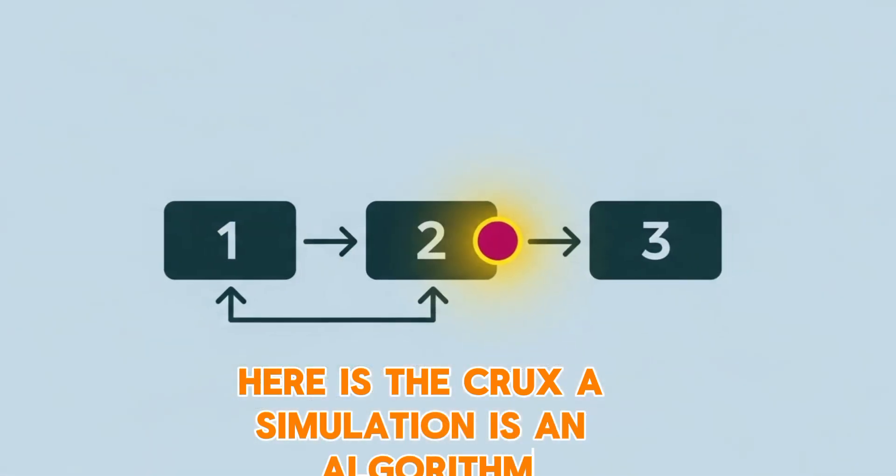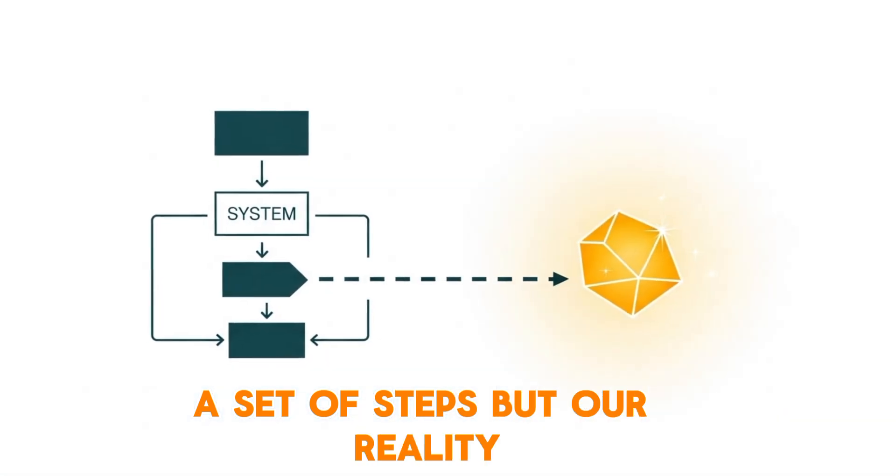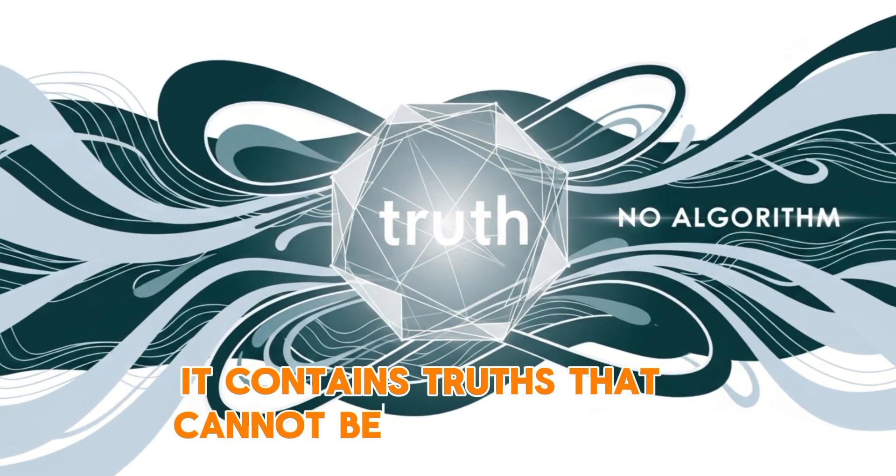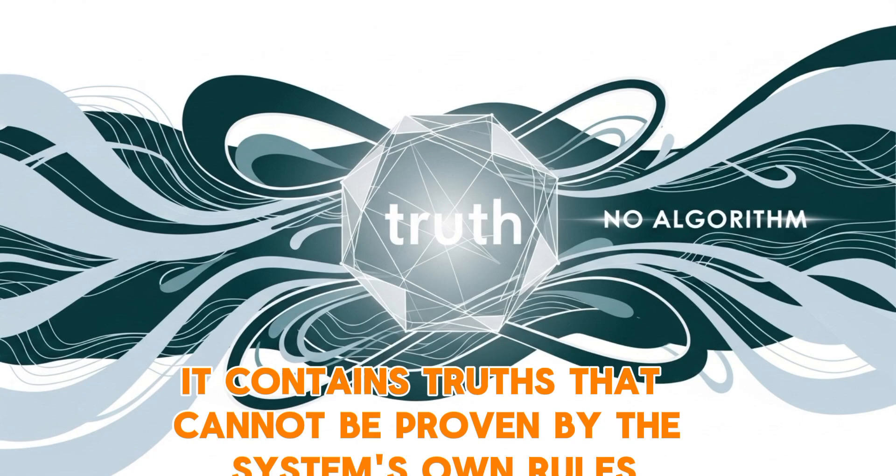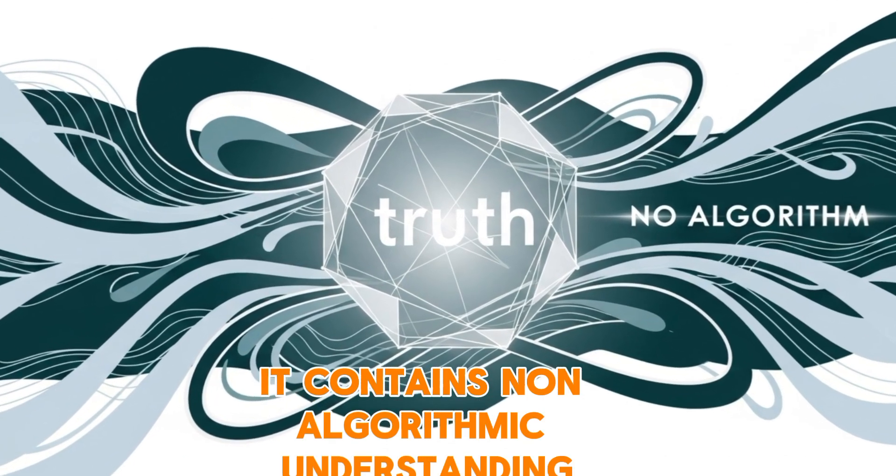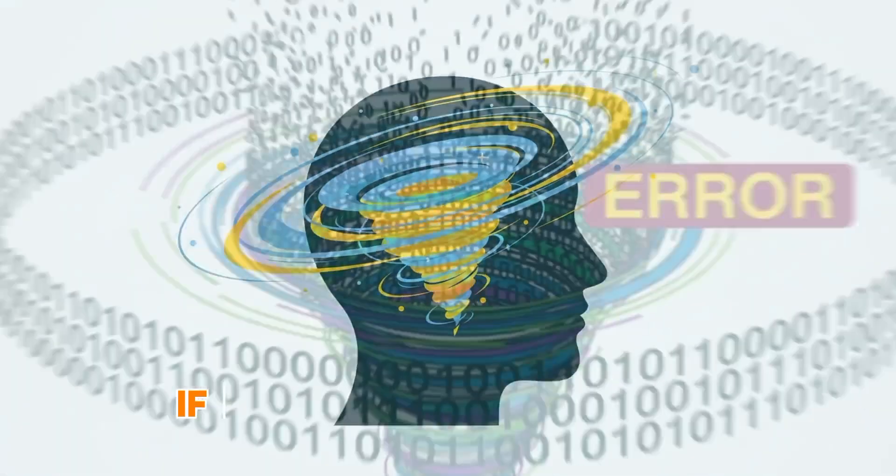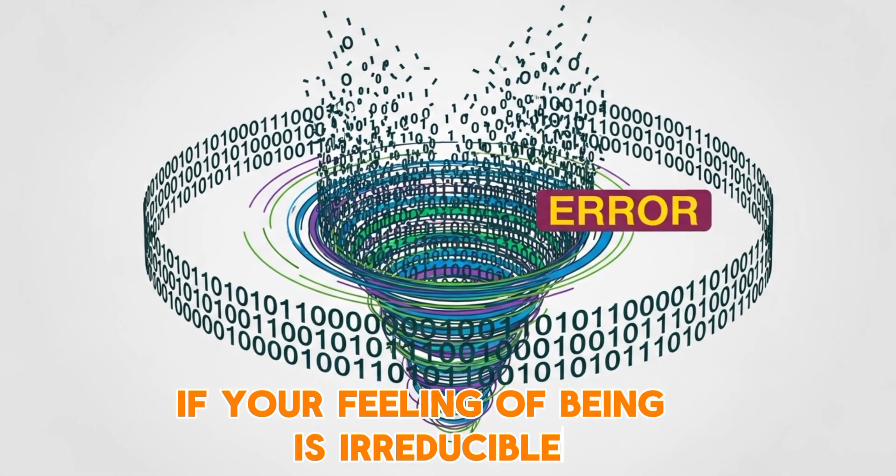A simulation is an algorithm, a set of steps. But our reality? It contains truths that cannot be proven by the system's own rules. It contains non-algorithmic understanding. If consciousness isn't just math,